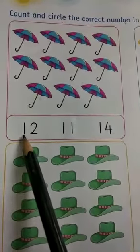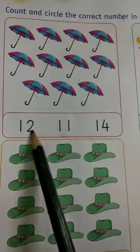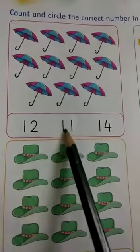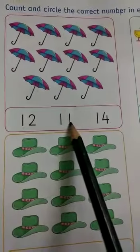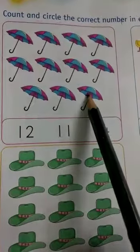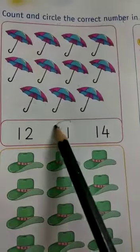This number is 1, 2, 12. Next number is 1, 1, 11. So, 11 umbrellas are. This is why we circle the number 11.